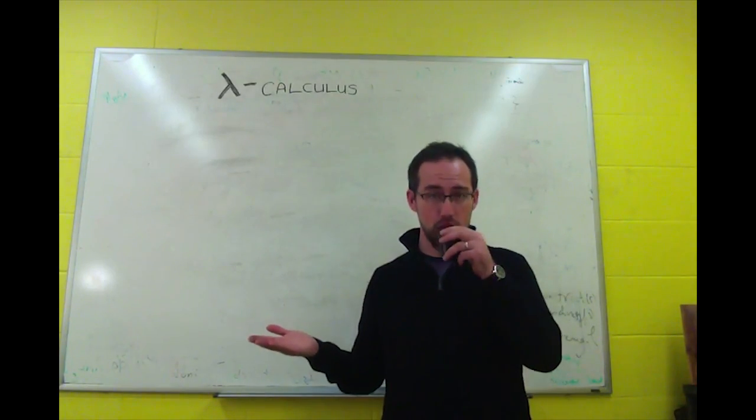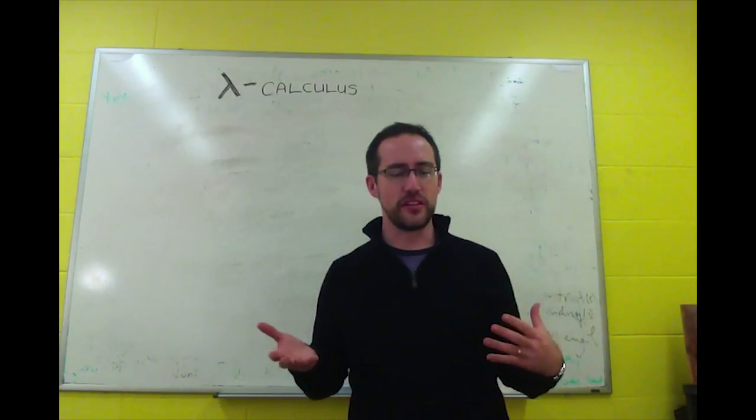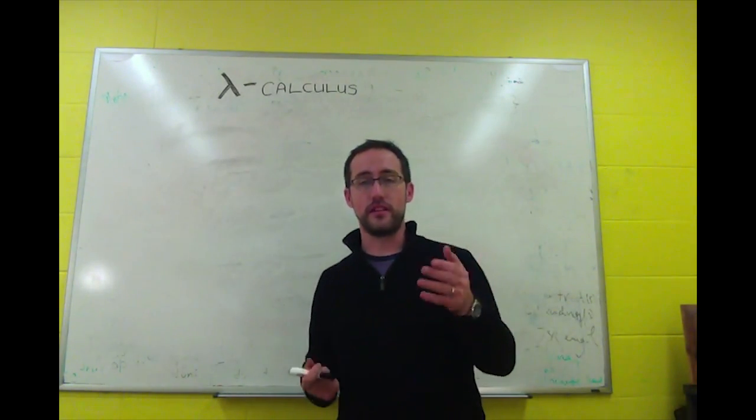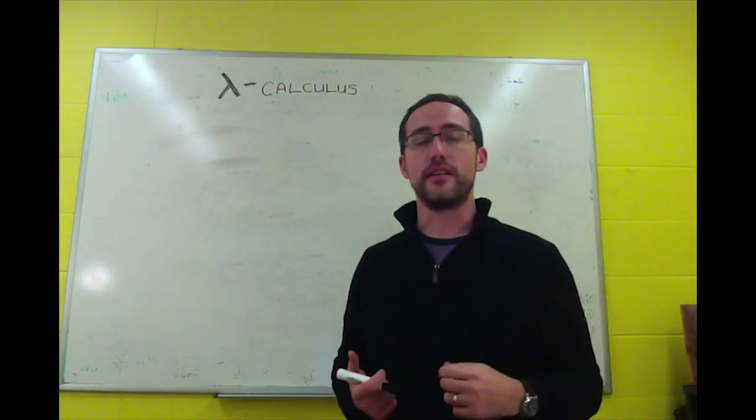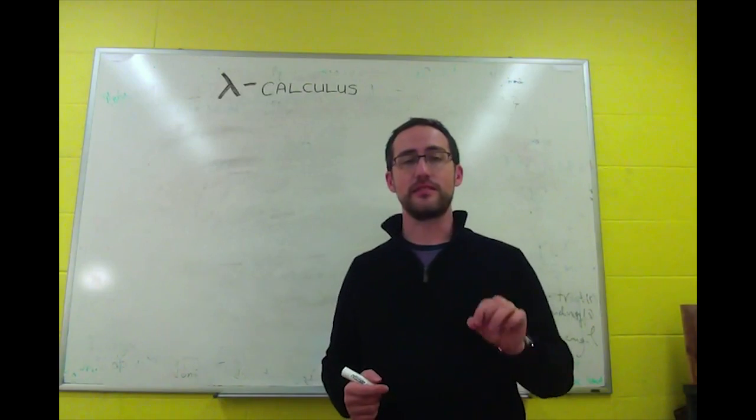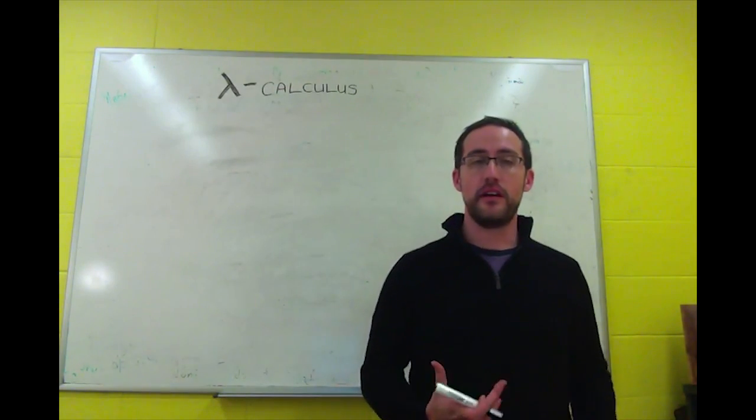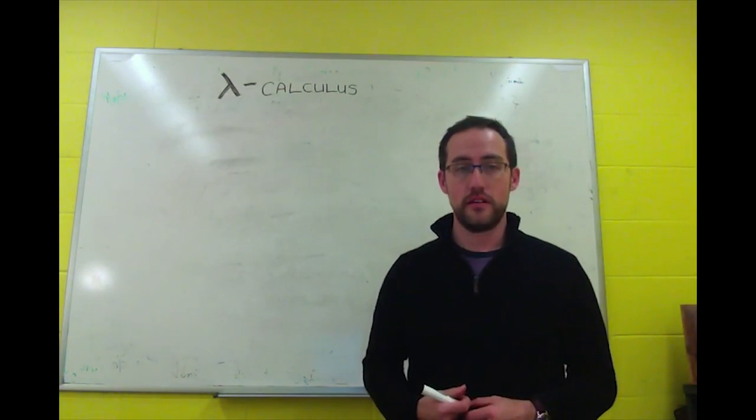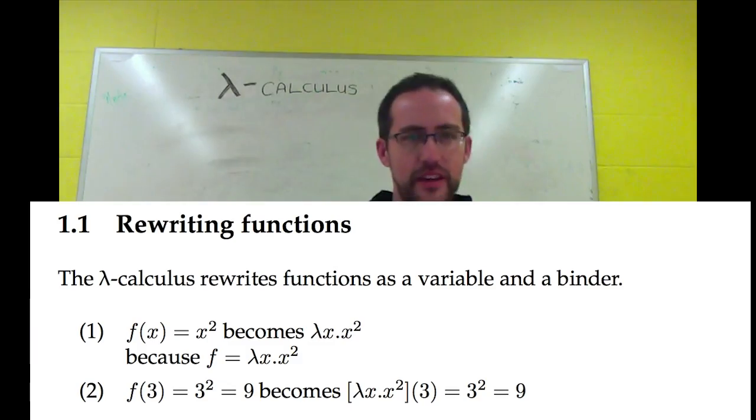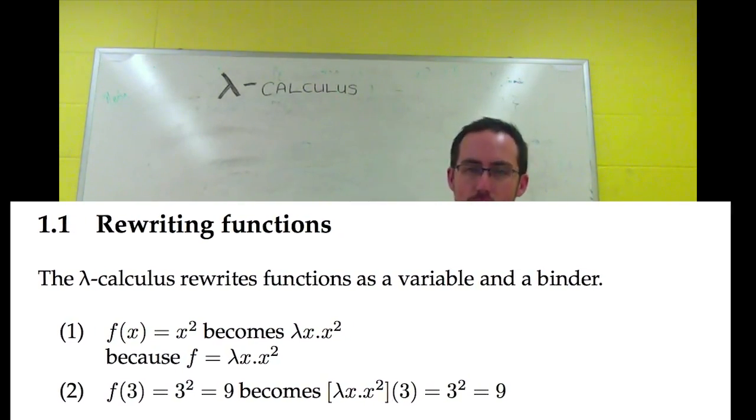Now, how does it work? It's pretty straightforward. Essentially, it takes a function, and in the lambda calculus, you rewrite it as a variable and a binder. So if you look at the handout, and number one, f of x equals x squared, standard function. Well, we would write that in the lambda calculus as lambda x, x squared, and in essence, that expression replaces f, and then x is the argument you plug into it. So if f of 3 equals 3 squared equals 9, then we take this lambda x, x squared, plug 3 into it, we get 3 squared, and that also equals 9.